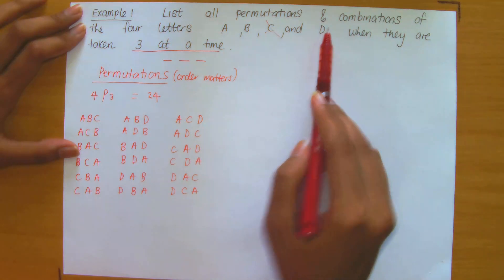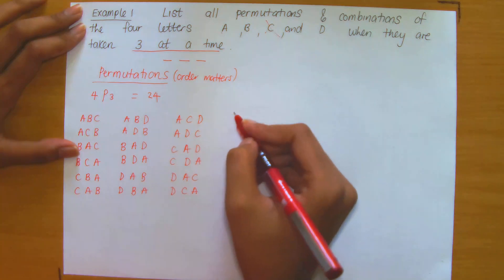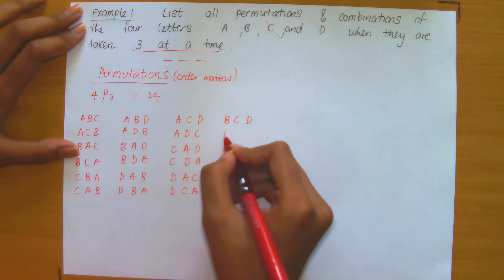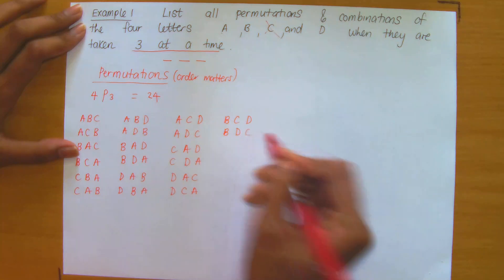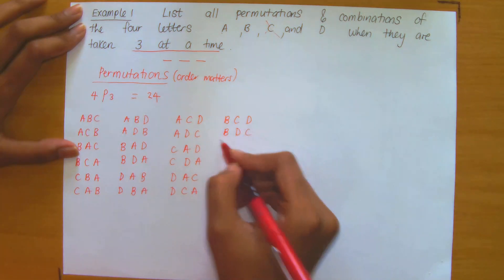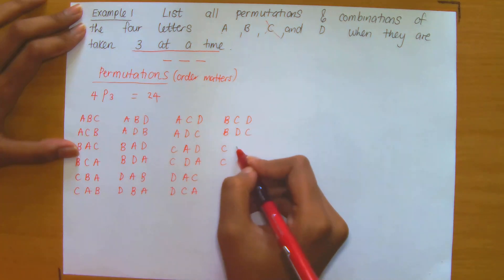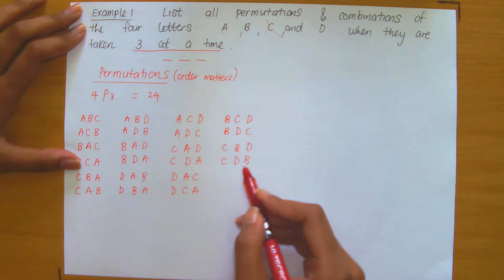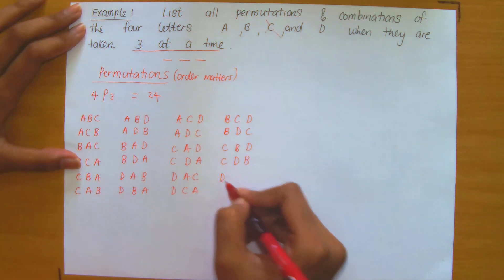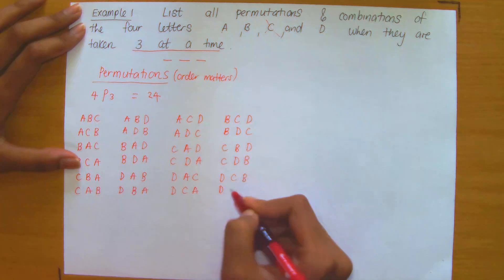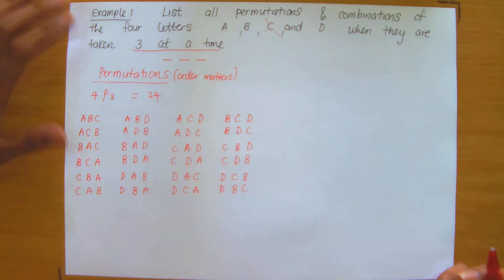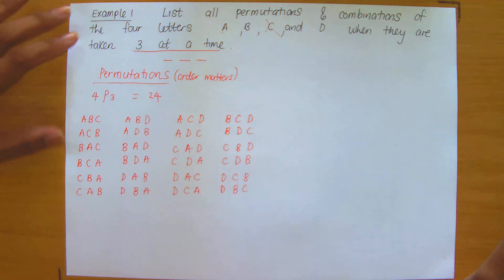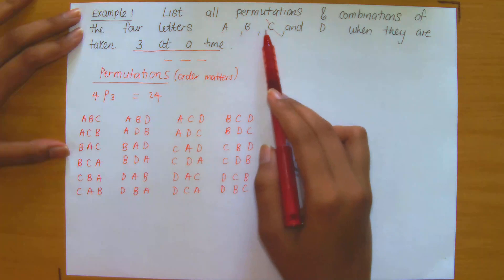Having excluded A, B, C in previous groups, let me now work with B, C, and D. Keeping B in first position but swapping D and C gives B, D, C. Giving C an opportunity in first position, I write C, B, D, then swapping gives C, D, B. Finally, D in first position gives D, C, B, then swapping gives D, B, C. That completes the permutations of B, C, and D.